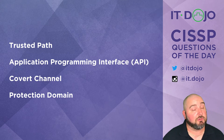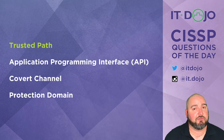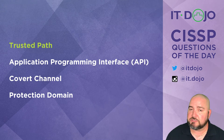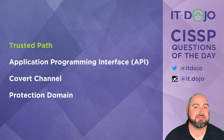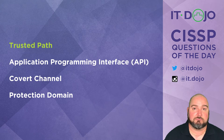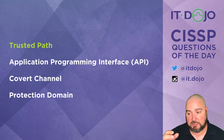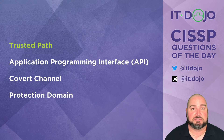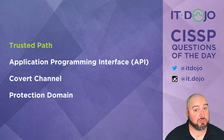The first answer choice is the one we're looking for: trusted path. This deals with the trusted computing base and a requirement in the TCB that authentication processes are free from outside intervention — that a user and the authentication processes are able to communicate with each other in a way that is trusted. That's called trusted path.